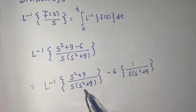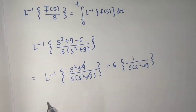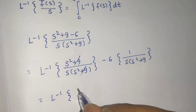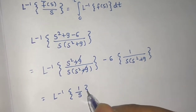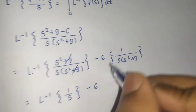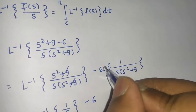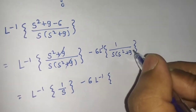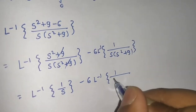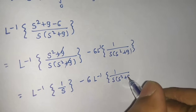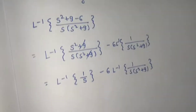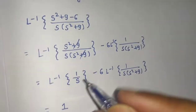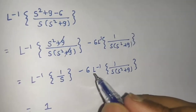Now you can easily see the (s² + 9) terms cancel, so we are left with the Laplace inverse of 1/s, minus 6 times the Laplace inverse of 1 upon s(s² + 9).